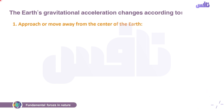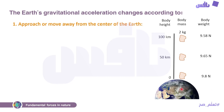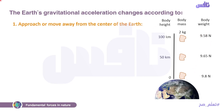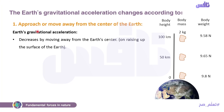The earth's gravitational acceleration changes according to: number one — approach or move away from the center of the earth. كل ما بتبعد عن the earth، هنا الmaس doesn't change لكن الويت بيتغير. By approaching the earth or moving away from the center of the earth, the gravitational force changes. Earth's gravitational acceleration decreases by moving away from the earth's center.